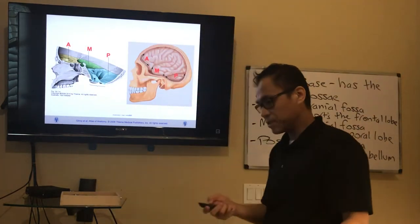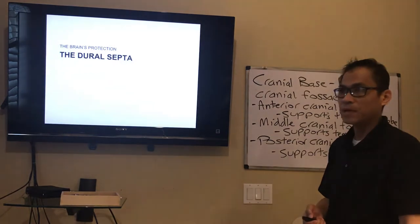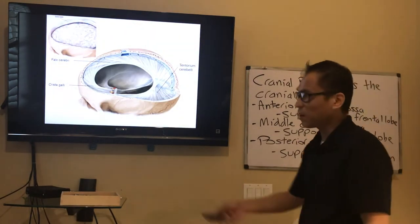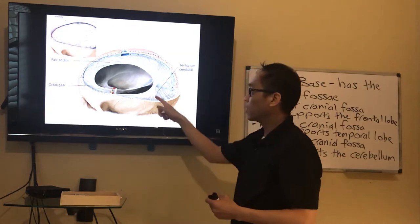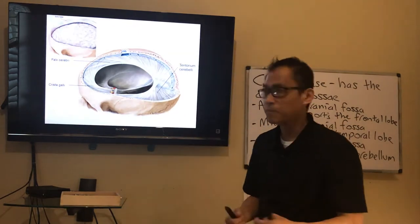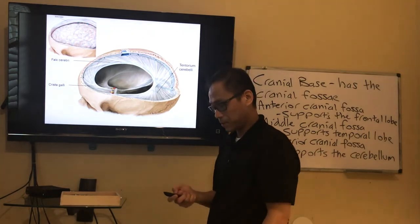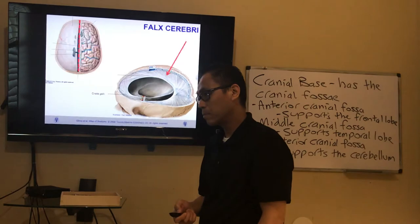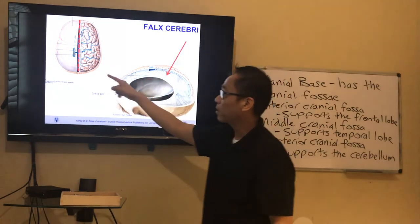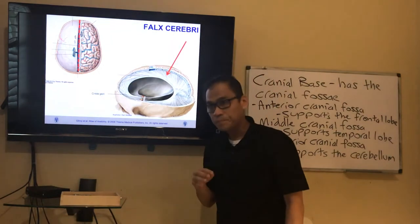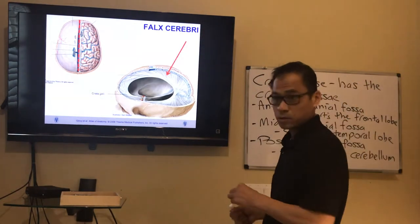Now you know how the brain sits in the cranial base in those fossae. Other things that help keep the brain in the brain case are the dural septa. Removing the brain, you can see these connective tissue barriers — the dural septa. The dura mater creates septa or partitions that separate parts of the brain in the skull. There are two I want you to know: the falx and the tentorium. The falx cerebri divides the left and right cerebral hemispheres in the sagittal plane.